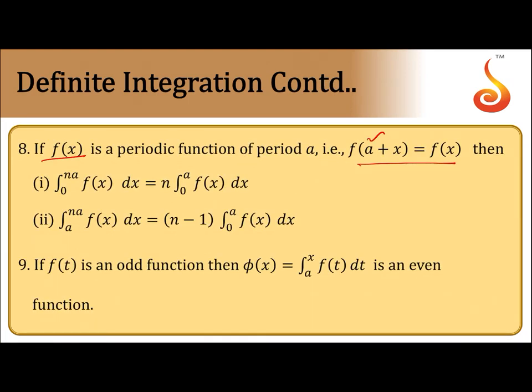For periodic functions: if f(x) is a periodic function with period a, then integral from 0 to na of f(x)dx equals n times the integral from 0 to a of f(x)dx.